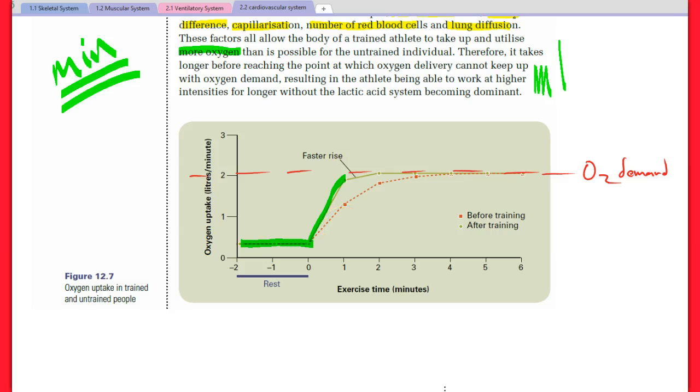Before training it's taken us that little while to get up to our demand, so we have a shortfall. That shortfall is referred to as oxygen deficit. The energy that would be required to work at the given intensity comes from our anaerobic energy systems, so anaerobic glycolysis and ATP-CP energy systems.